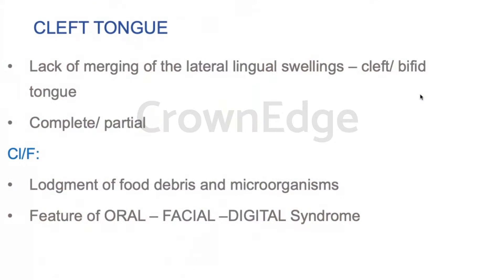Coming to cleft tongue: the tongue develops from the fusion of two lingual swellings from the mandibular arch. Whenever there is a failure of fusion of these two lateral lingual swellings, we end up having a cleft or bifid tongue, which can be complete or partial.